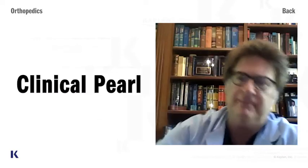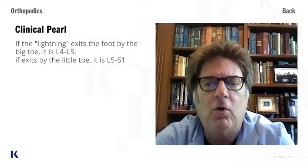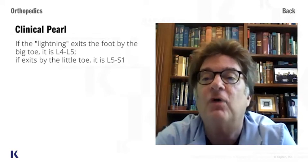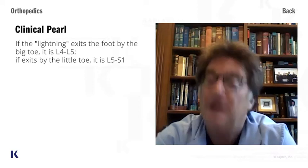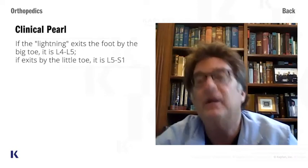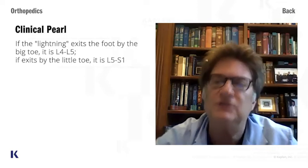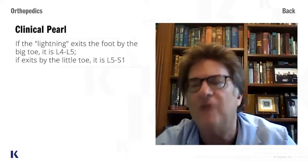Test question — and a life question: if the lightning pain shoots out of the big toe, that is L4-L5. If it's the baby toe, that is L5-S1. You need to know that for the test and for clinical practice. You will get an MRI to confirm it, but you still need to know: big toe = L4-L5, baby toe = L5-S1.